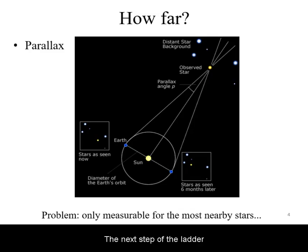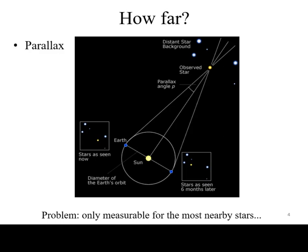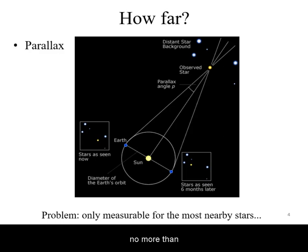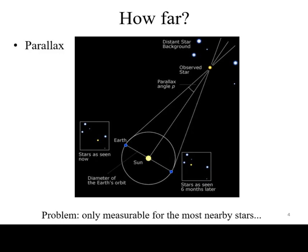The next step of the ladder is Stellar Parallax. Because the Earth orbits the Sun, nearby stars will seem to shift relative to farther-away stars throughout the year. This only works for stars no more than a few hundred light-years away, but it does give us a distance measurement to nearby star clusters.